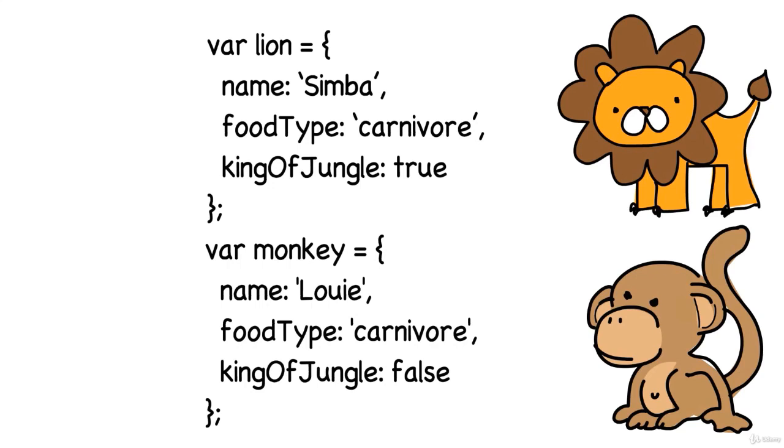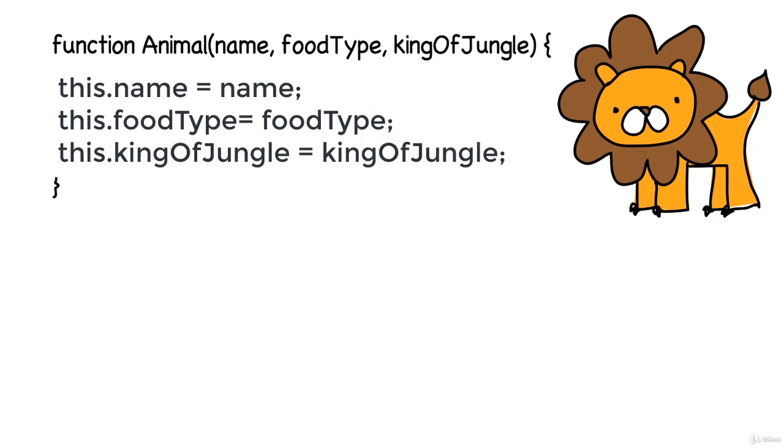So let's create another object constructor function. It looks like all of our animals are going to have a name, food type, and status as to whether they are king of the jungle. We'll start off by declaring a function and choosing a function name, in this case animal. Again, we capitalize it as best practice. We then fill in the parameters, which are name, food type, and king of the jungle. Then we have opening and closing curly braces for our function code. And there we place our this keyword that will be referring to the object constructor function. Attached to each keyword is the property that will belong to each instance of the object. And then we set the value equal to the parameter above that will be filled in with the argument when we invoke the function.